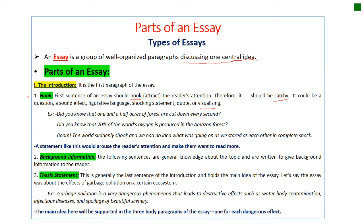Let's take an example: 'Did you know that one and a half acres of forest are cut down every second?' I started with a question hook, and it's also a shocking statement. 'Did you know that 20% of the world's oxygen is produced in the Amazon forest?' Another example — 'The world suddenly shook, and we had no idea what was going on as we stared at each other in complete shock.' Those are three different types of hooks. But please, whenever you decide to use a fact or statistic, if you are not 100% sure of it, don't ever use it — it will discredit your whole essay and you will lose credibility.